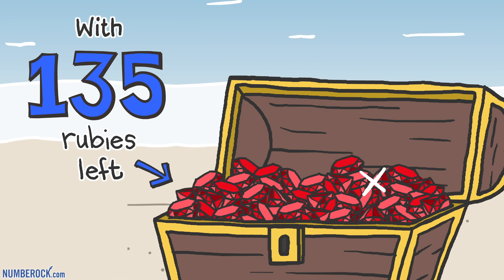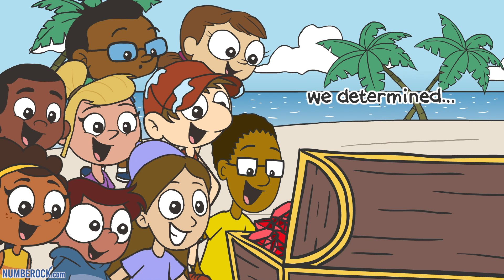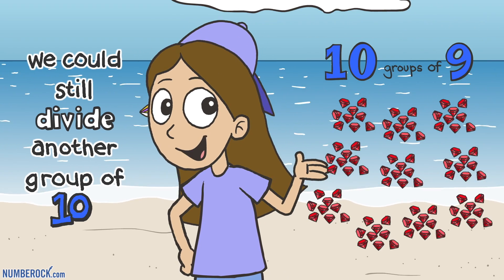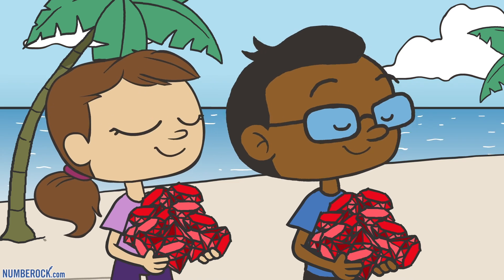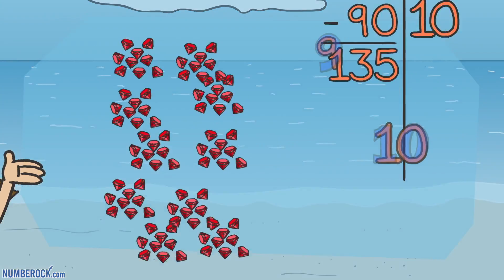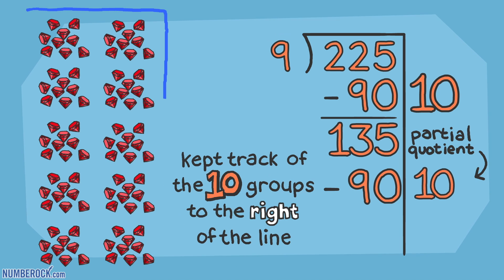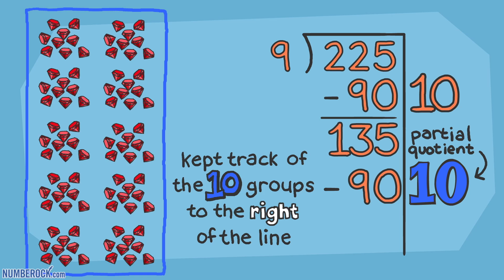With 135 rubies left, we determined we could still divide another group of 10. We wrote the 90 and then a subtraction sign, dragged up the 10 groups to the right of the line.